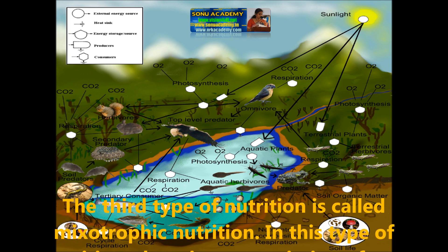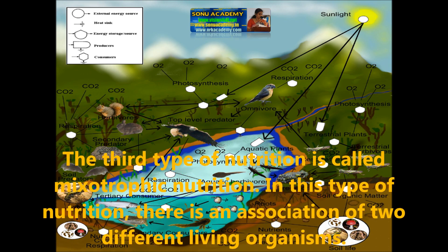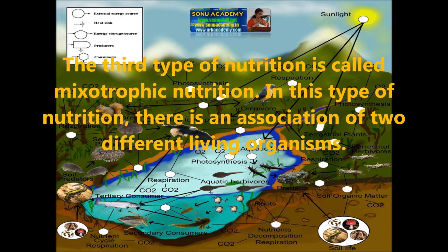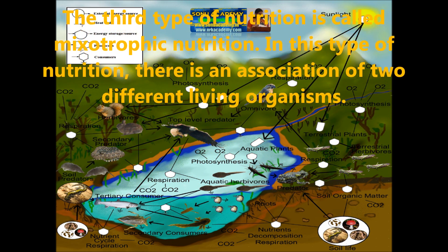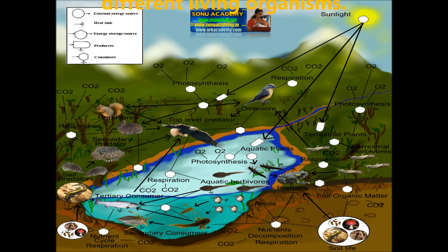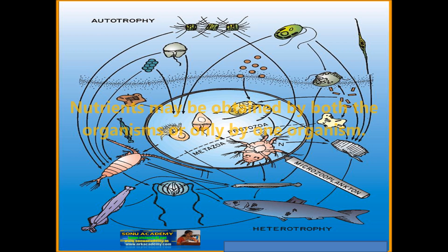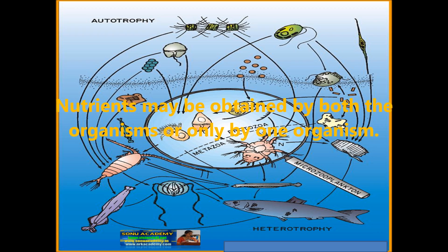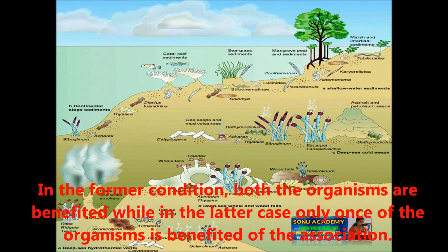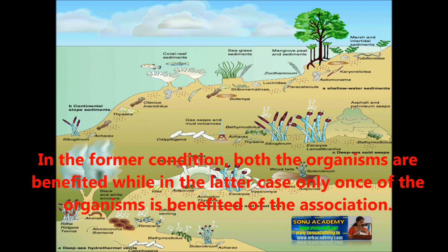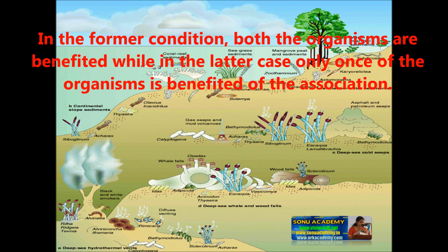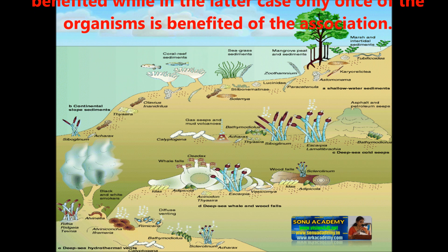Mixotrophic nutrition is the third type of nutrition. In this type of nutrition, an association of two different living organisms can be seen. The nutrients may be obtained by both the organisms or only by one organism. In the former condition both organisms are benefited, while in the latter case only one of the organisms is benefited from this association.